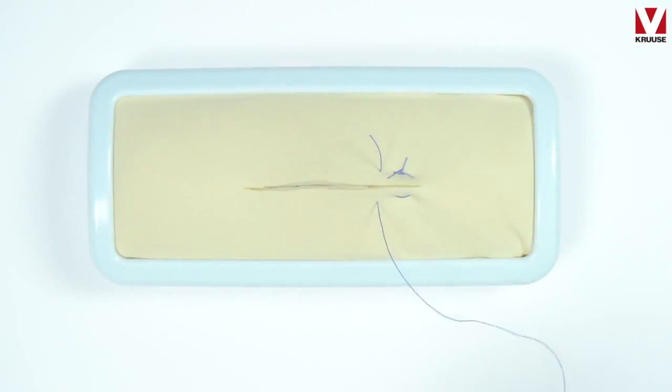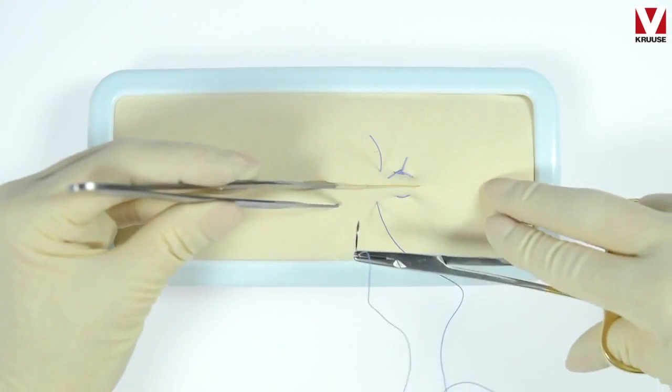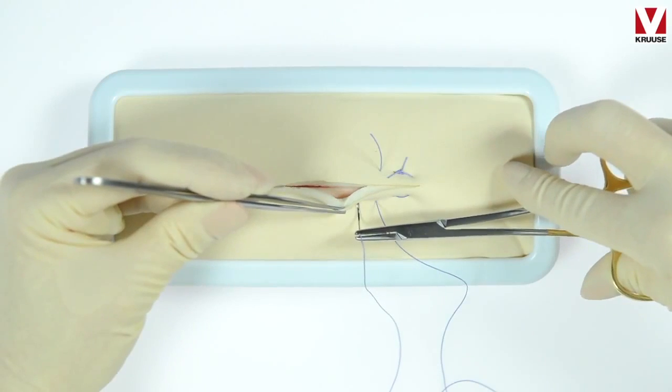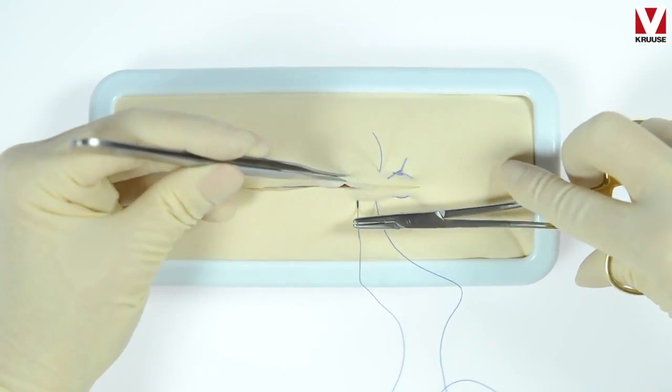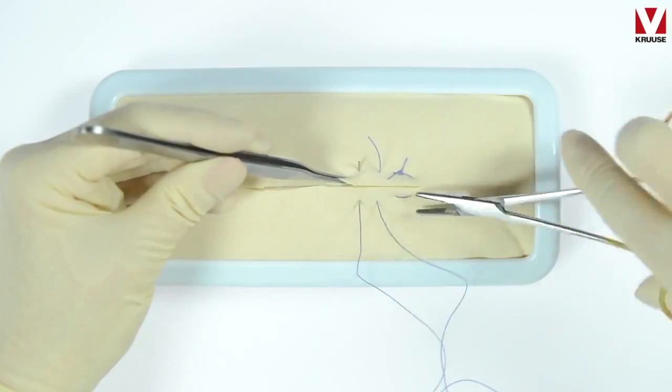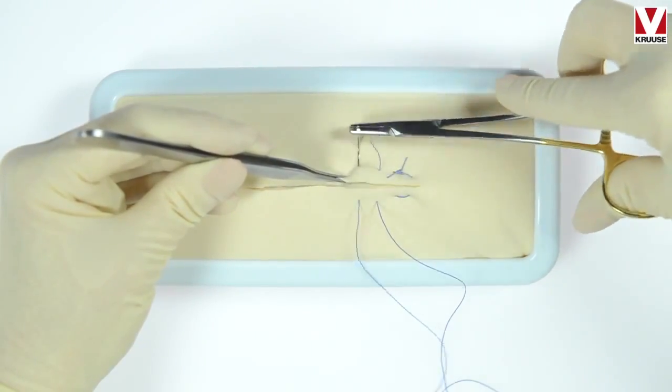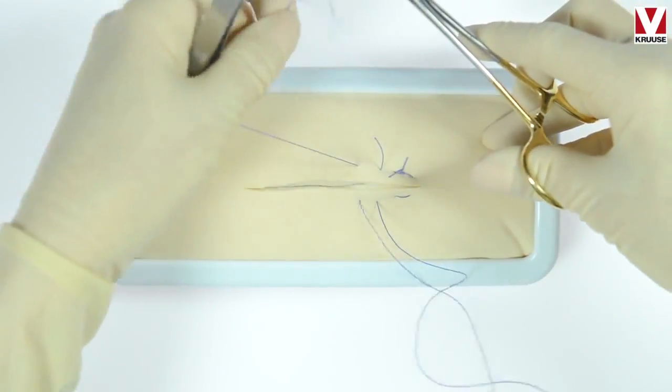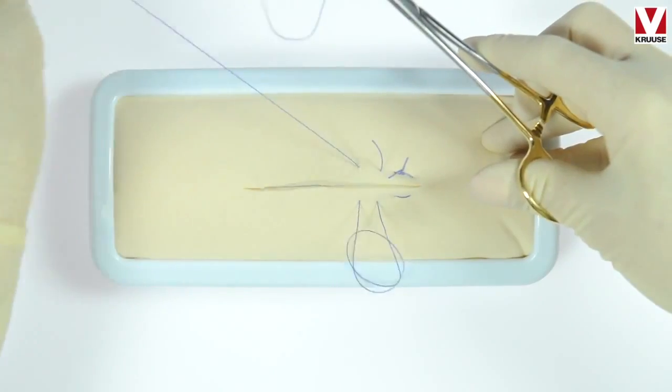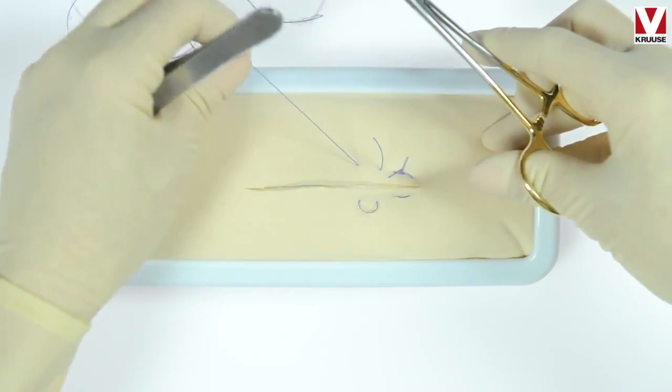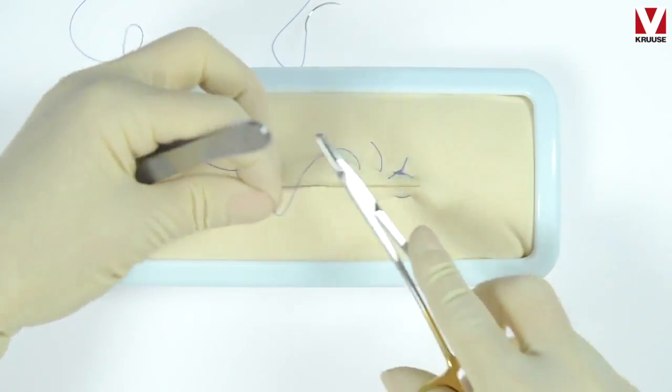I load this suture again with the needle holder opposite of what I normally would do, and then I make the knot. You see here we make the knot with another pattern where you make three throws instead of two.